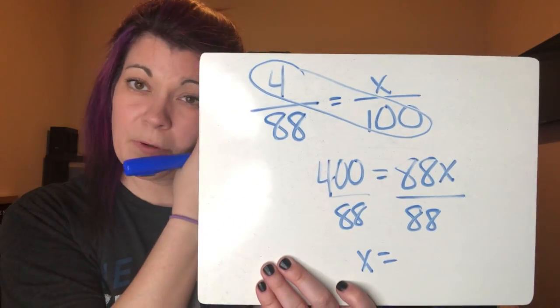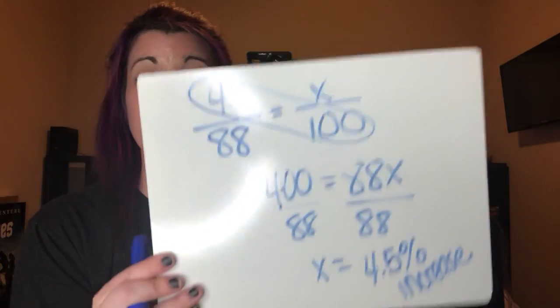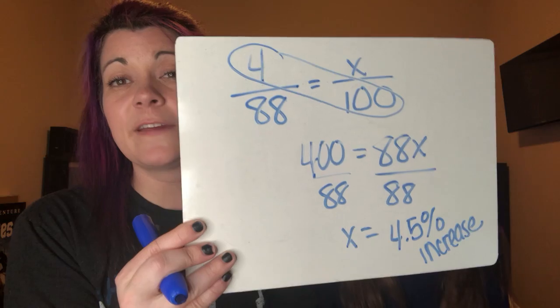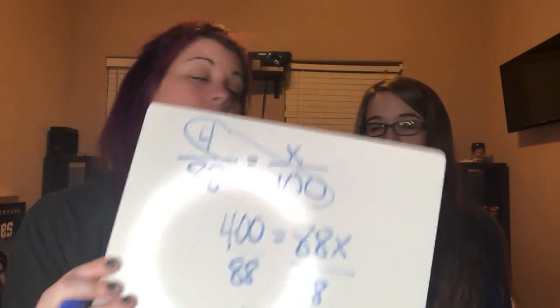Now we solve it: 4 times 100 is 400, and 88 times x is 88x. Divide both by 88 and you get 4.5 — it's a 4.5 percent increase. Sometimes your teacher will want you to tell them if it's an increase or a decrease. That is how you do percent of change — simple as that. Thank you for listening and have a great night!